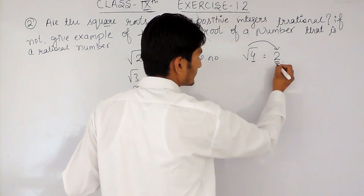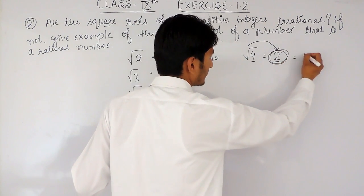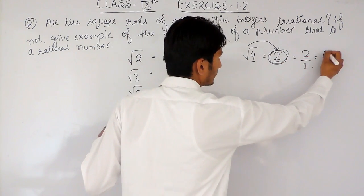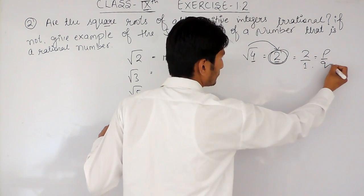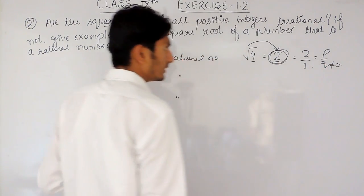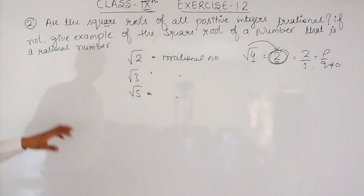Obviously this is a rational number that can be written in the form of 2 upon 1, that is p upon q where q is not equal to 0. So obviously the square roots of all positive integers are not irrational.